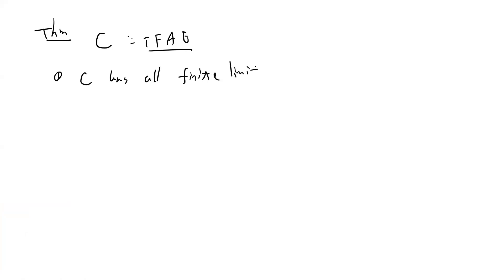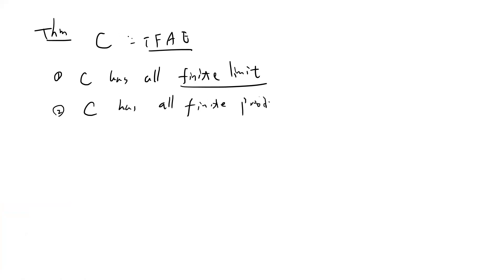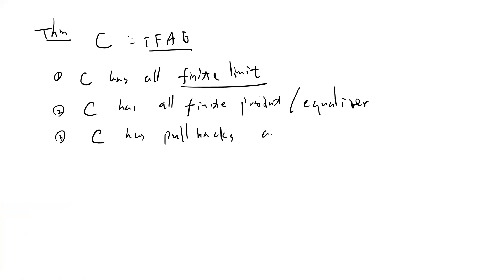Let me explain what 'finite' means — given any finite diagram it has a limit. So the equivalences are: C has all finite products and equalizers, and C has pullbacks and a terminal object.